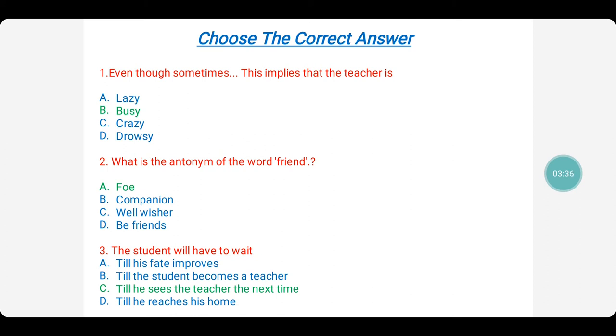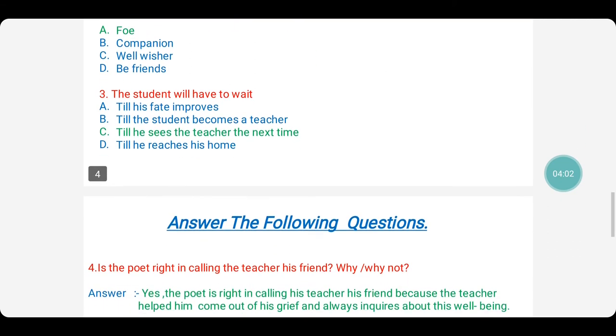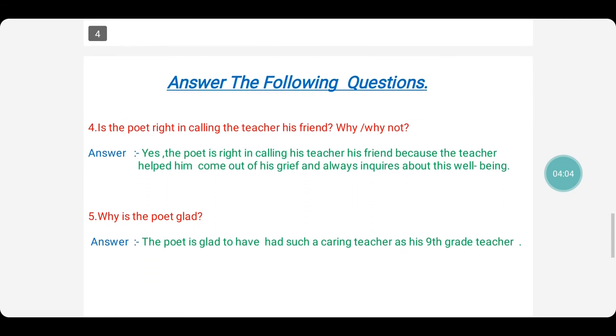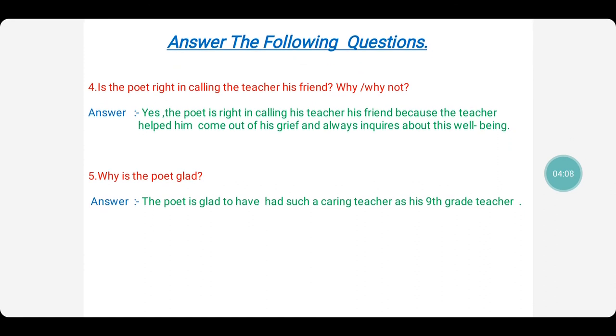On to the next question. The student will have to wait till his fate improves, till the student becomes a teacher, till he sees the teacher the next time. So, he says, I will have to wait. Wait for what? Wait for the arrival of the teacher next time. Next time when the teacher would greet him, teacher would ask him if he was fine. So, he needs to wait for that moment.